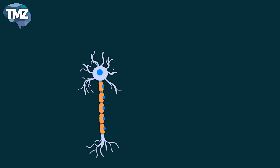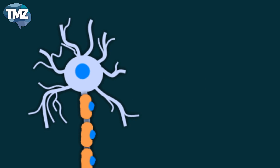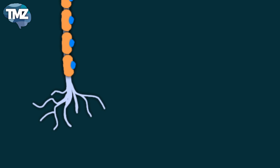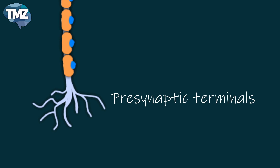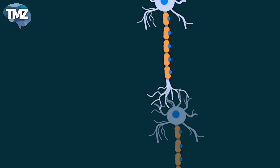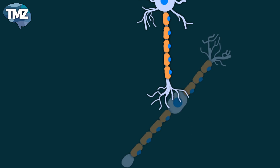The cell body contains the nucleus of the cell. The dendrites extend from the cell body and they receive information from other neurons. The axon terminals are also known as presynaptic terminals, and they are very fine branches that form communication sites with other neurons. Most end on the adjoining neuron dendrites, but some end on adjacent neuronal cell bodies as well.